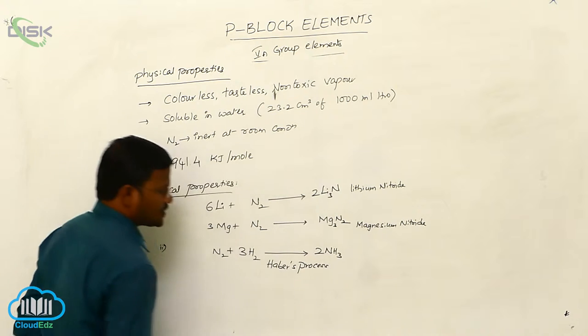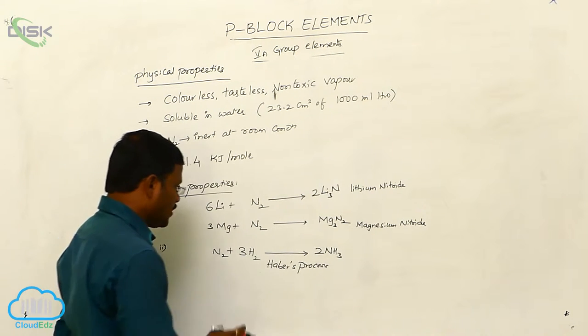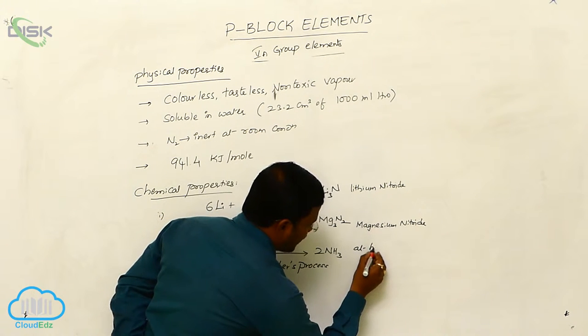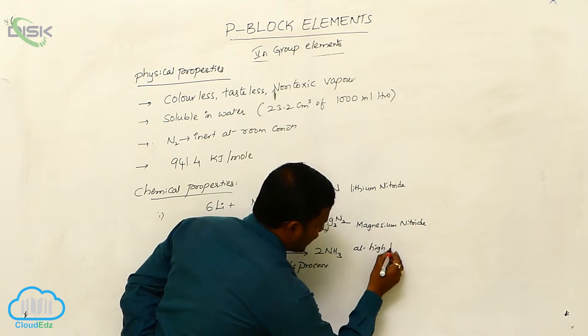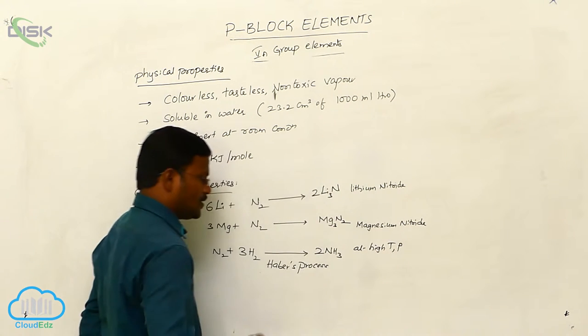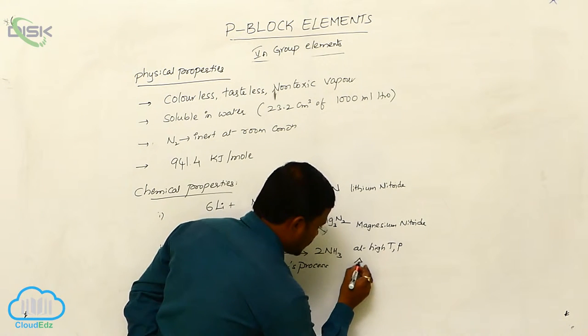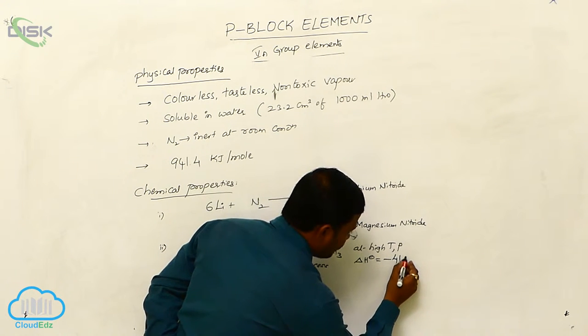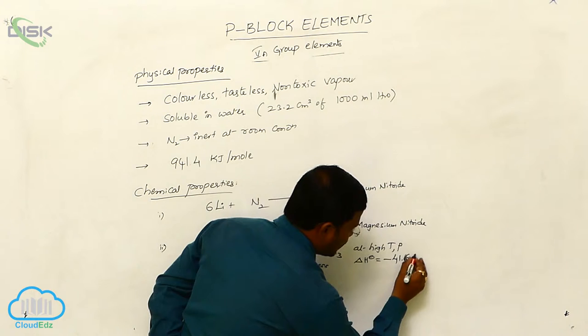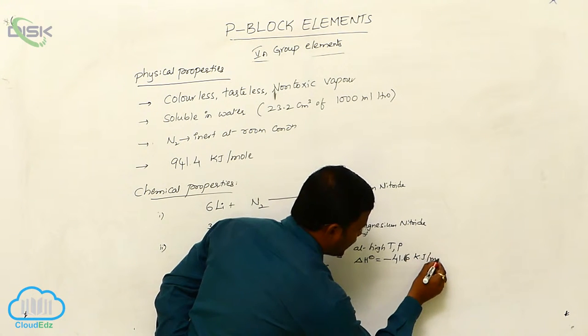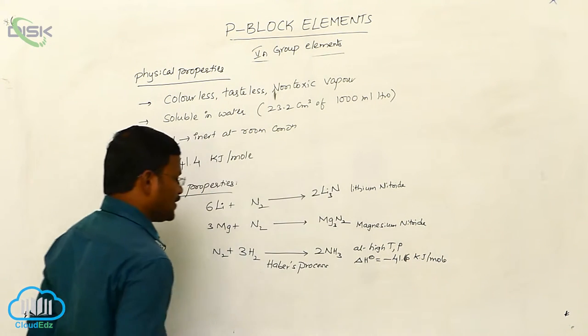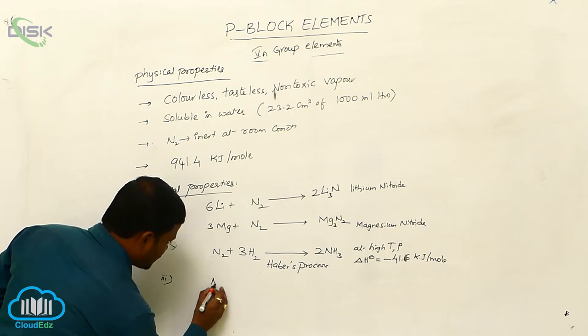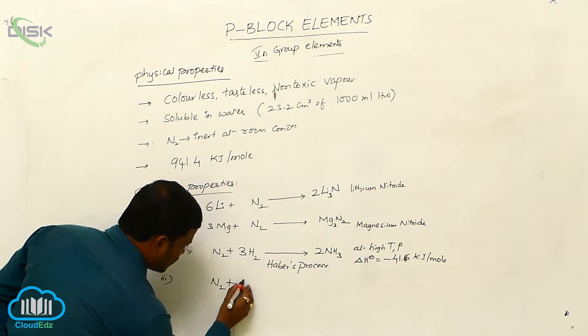Haber's process of preparation of ammonia takes place at high temperature and pressure. During this reaction there is a release of energy, nearly 41.6 kilojoules per mole amount of energy is evolved during the process.